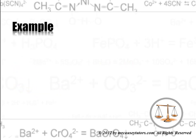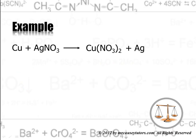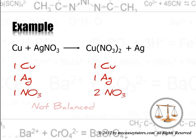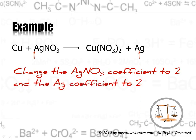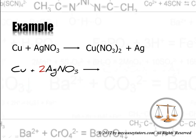Here's another example: copper and silver nitrate give us copper 2 nitrate and silver. This time I'm going to take roll — one copper, one copper, one silver, one silver, one nitrate, two nitrates — so it's not balanced. But I could balance that by changing the silver nitrate coefficient to 2 and the silver coefficient to 2. By doing that, I'm going to have a balanced equation.